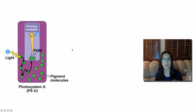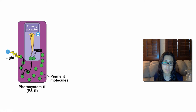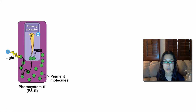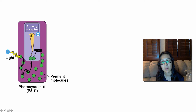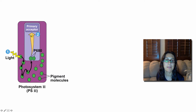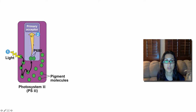Let's go over the entire flow of electrons through the light-dependent reactions. Steps one and two are what we just talked about: a photon strikes a pigment molecule, passing on the energy until it gets to the chlorophyll A molecules, which then pass their electrons to the primary electron acceptor. We start in photosystem II — the chlorophyll A molecules in photosystem II are called P680 — and they are the ones that donate their electrons.